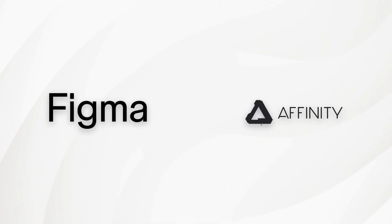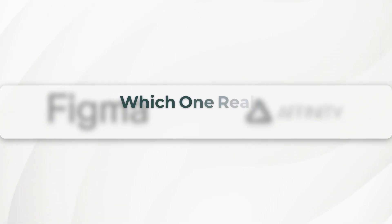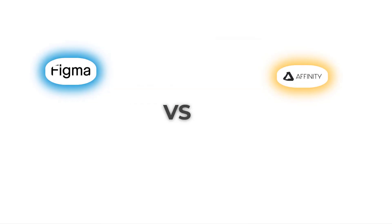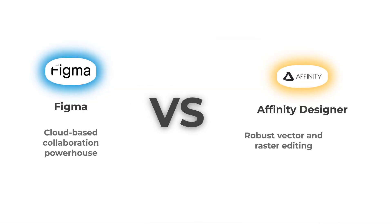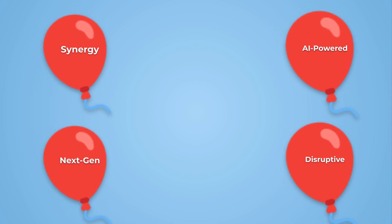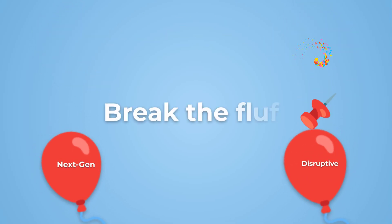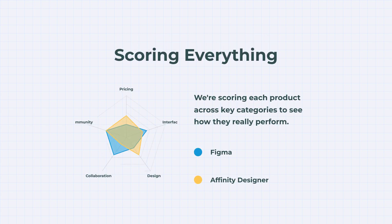Two big design names, one big question: which one really delivers? On the left, Figma, the cloud-based collaboration powerhouse. On the right, Affinity Designer, known for robust vector and raster editing. Let's skip the buzzwords and dive into what actually matters. Each category earns points, and by the end, you'll see exactly who comes out on top.